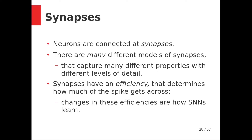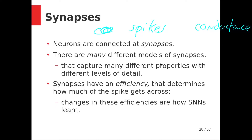Synapses — neurons are connected at synapses — and there are many different models of synapses, which might be surprising. They capture many different properties with many different levels of detail. One model is the conductance model, where instead of a spike happening atomically at a point in time, you have a current flowing across the synapse that spikes very high and then decays, smearing the spike out over a small time window. It depends on the voltage difference between the pre- and post-synaptic neuron.